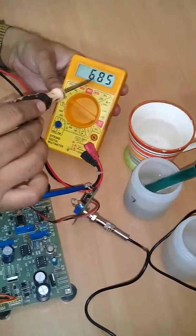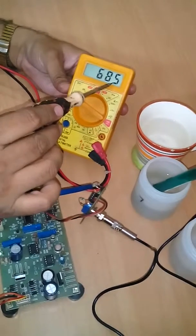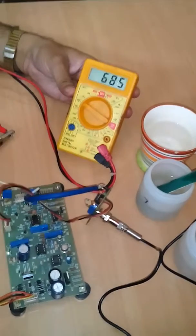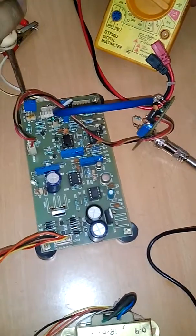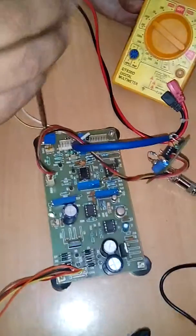So the pH reading at present is 6.85 pH. Adjust this reading to 7 pH by using this trim port connected at connector number 2.